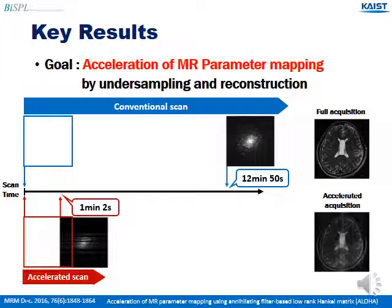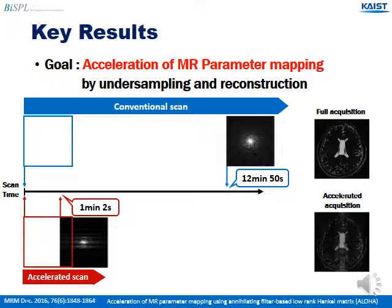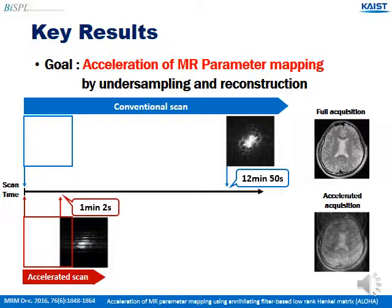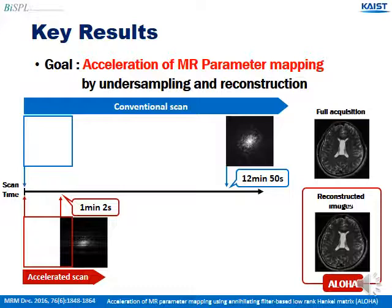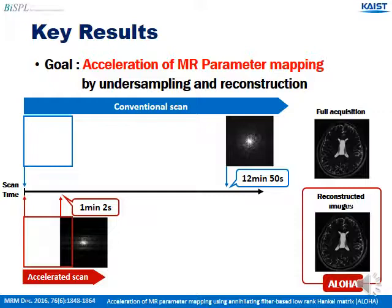The blue one is the conventional T2 scan. It takes more than 12 minutes for full acquisition. If we accelerate the scan by undersampling, the scan time is reduced to the one-minute order. However, the reconstructed images have this kind of strong aliasing artifact. So, using ALOHA, we want to reconstruct the clear artifact-free image.